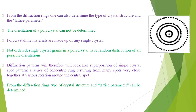From the diffraction rings, one can determine the type of crystal structure and the lattice parameters. However, the orientation of a polycrystal cannot be determined, since there is no single orientation — flipping or turning the polycrystal will yield the same ring pattern.